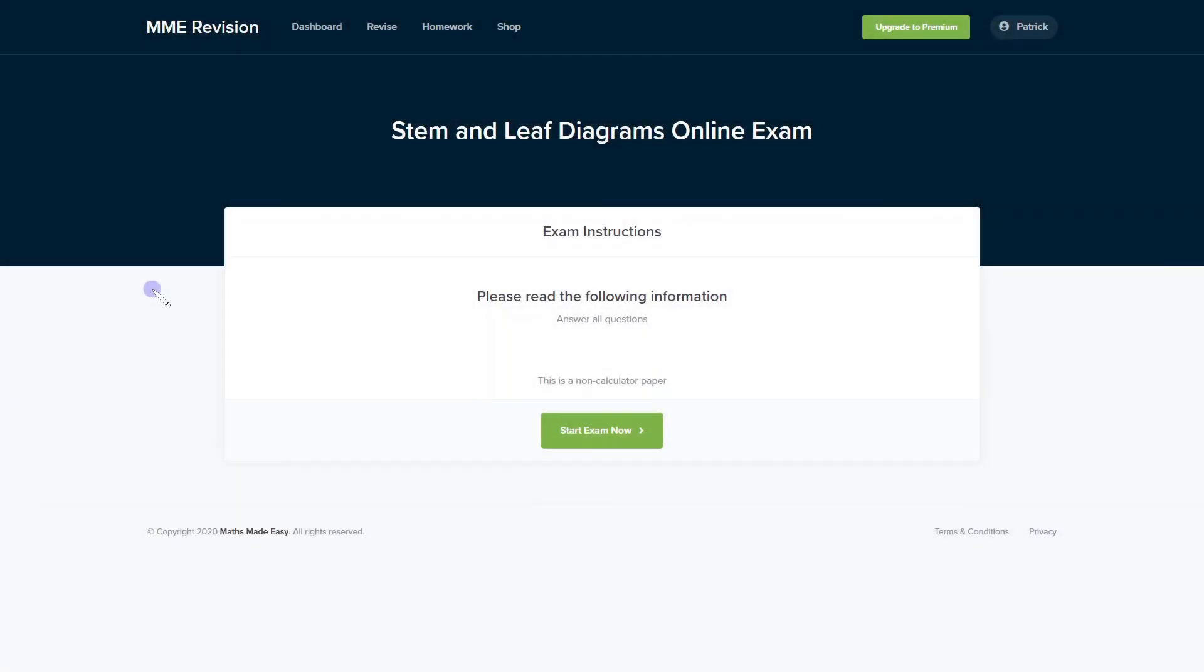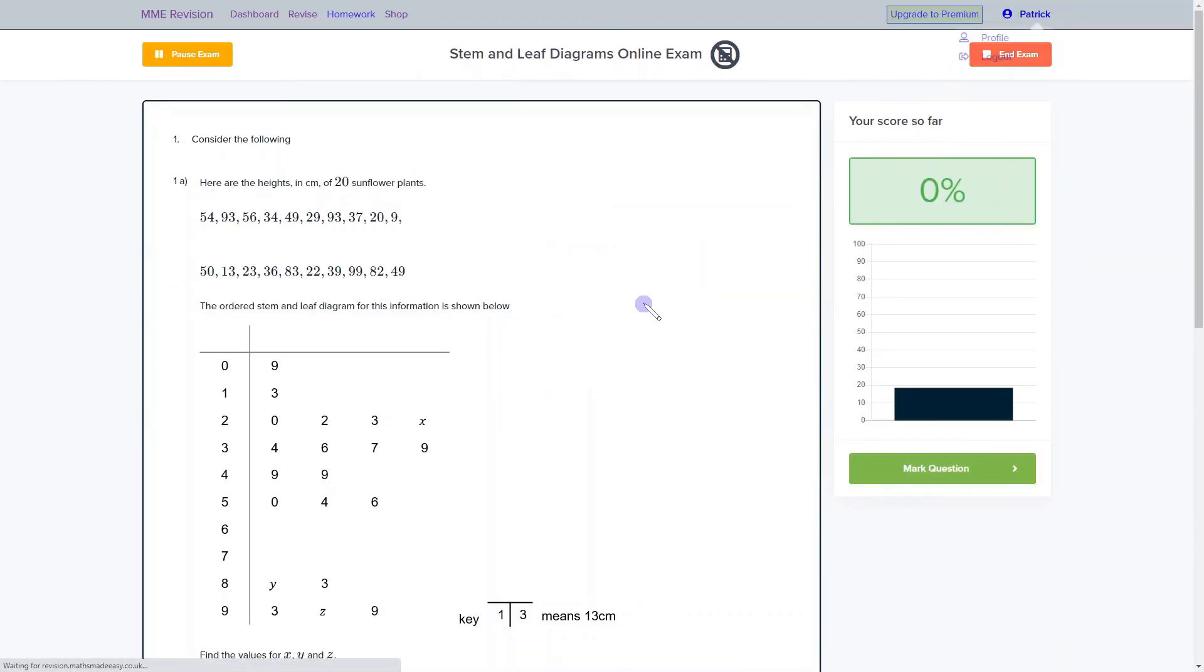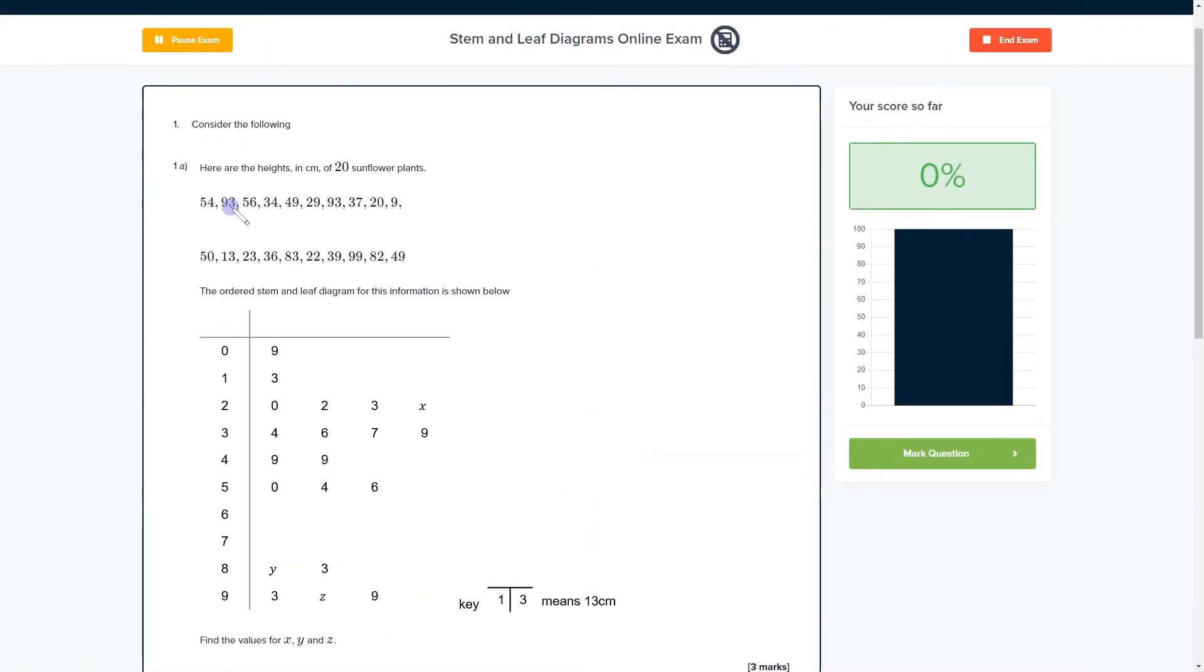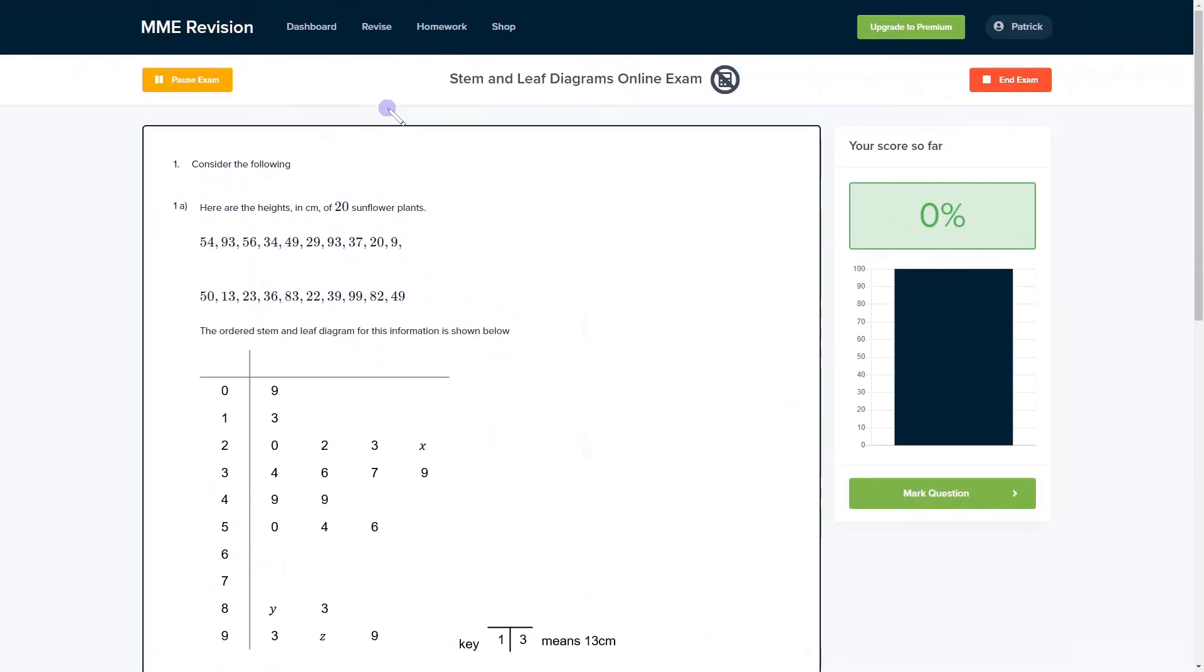If you'd like to get some practice with some stem and leaf exam style questions you can do so with our online exam. It's available through our revision platform and if you take the test you'll find loads of different questions to have a go at and you get instant feedback on everything. So you can find out which areas you're strong at, which areas you're weak at and where you need to improve. So if you're interested and you want to take the test then you can click the link below and it will take you straight there.